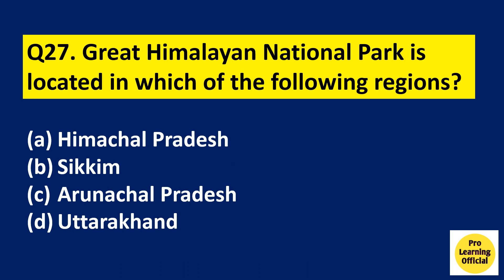Question number 27: The Great Himalayan National Park is located in which of the following regions? Option A: Himachal Pradesh. Option B: Sikkim. Option C: Arunachal Pradesh. Option D: Uttarakhand. The right answer is Option A, Himachal Pradesh.